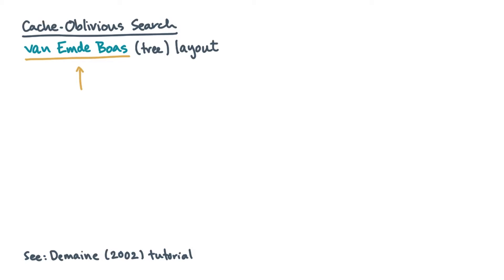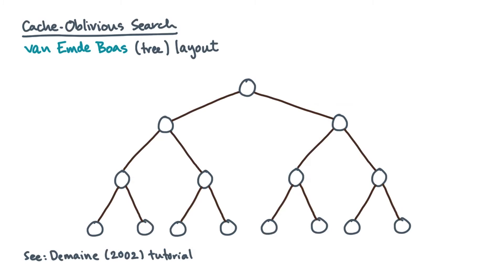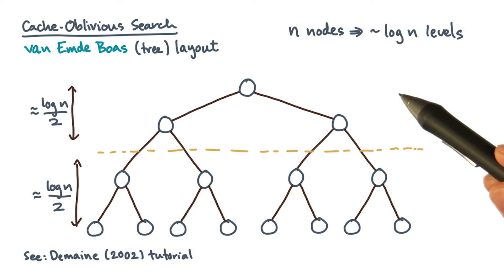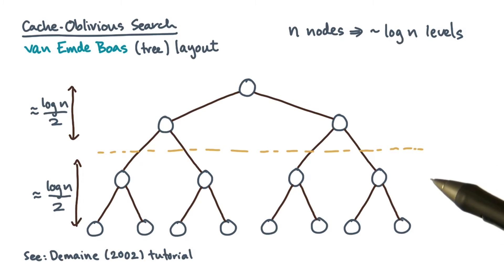The idea is to use the following recursive layout. Suppose you start with a complete binary search tree. If it has about n nodes, it should have log n levels. Now divide the levels in half. So there would be about one half log n levels above the cut line and about one half log n below. This also means the upper subtree will have about root n nodes. Below the cut line, there will be about root n subtrees, each of size root n.